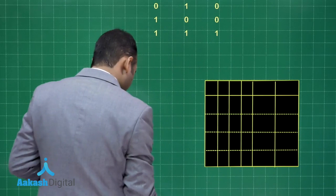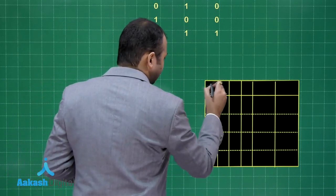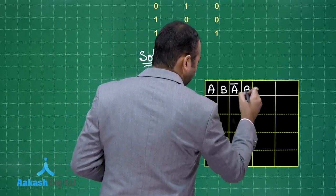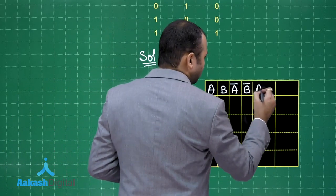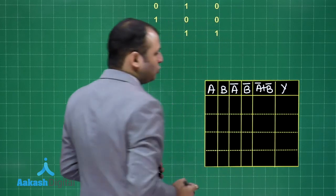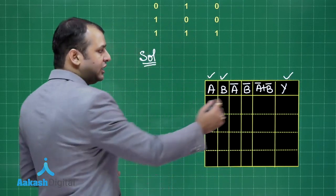So this is the table which I have already made for you, the framework solution. Let us take this as A, this as B. This will be our A bar, this will be our B bar. This will be A bar plus B bar. This is Y. So truth table basically, this will be formed from this.